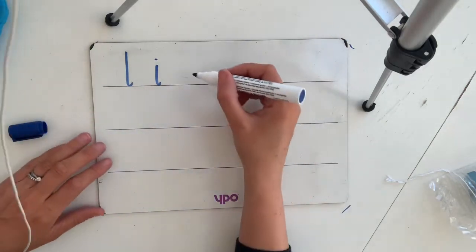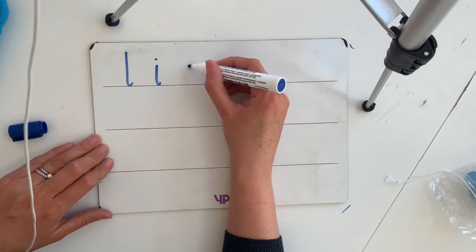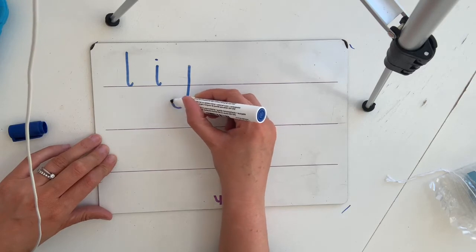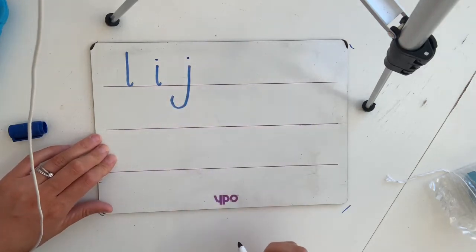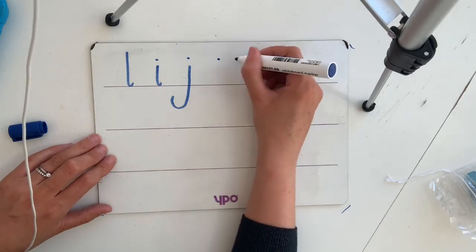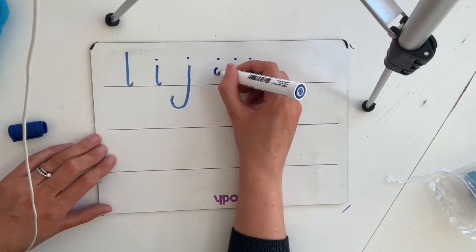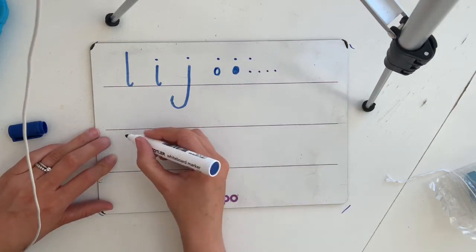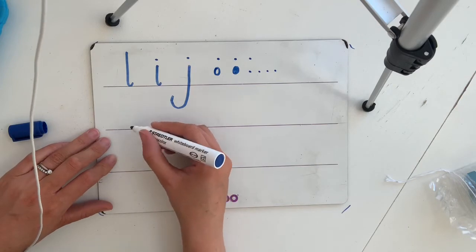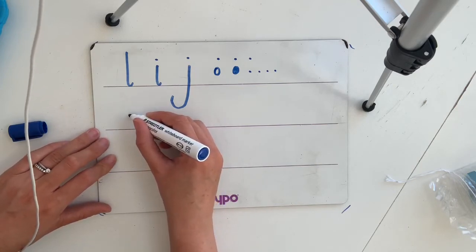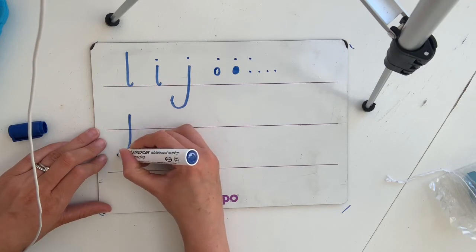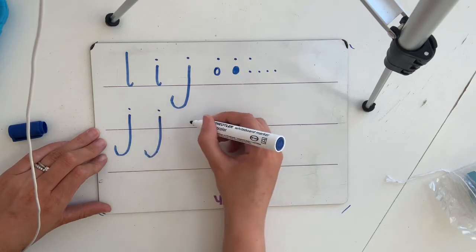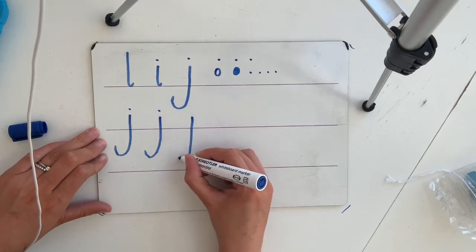The next letter that we're practicing writing is J. So we start at the top, about the same height as I. Come down, cheeky monkey. But it's going that way this time and a dot at the top. Please do your dots like this, not like this and not like this. Just nice little dots. So let's have a go then at J. Same height as I, straight down cheeky monkey. And the trick is keep it as straight as you can until that cheeky monkey tail.